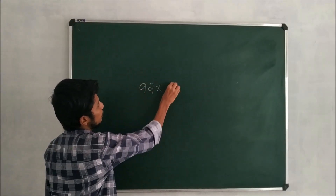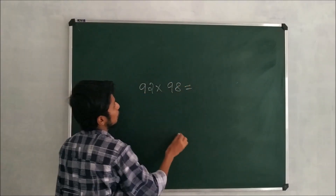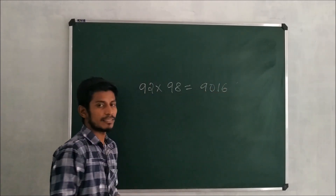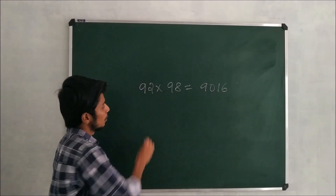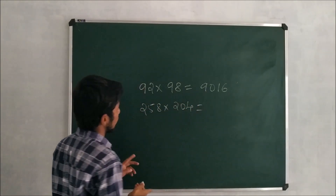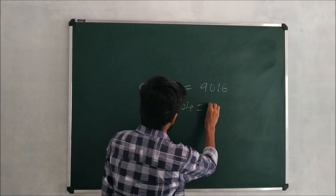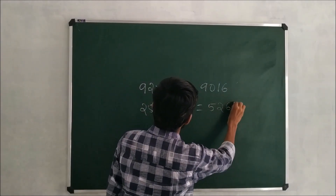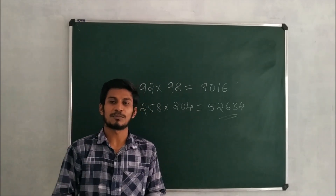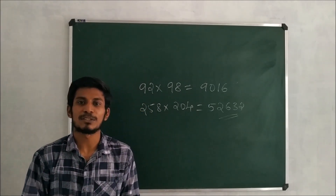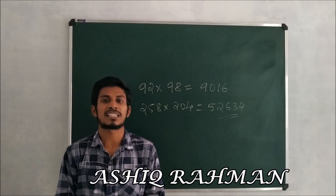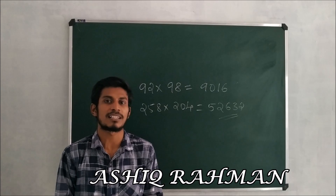92 × 98 = 9016. 258 × 204 = 52632. Welcome back to Shader Academy. I am Ashik Rohman, and you are watching Shadows 5 Second Tricks. Let's get into the class.